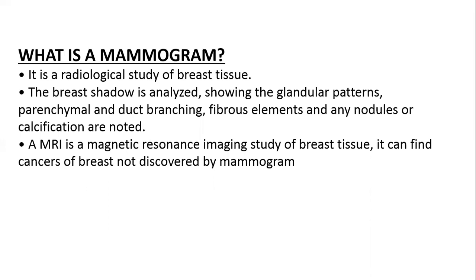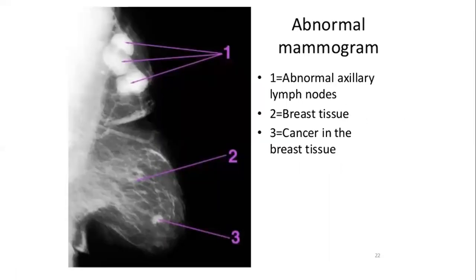A mammogram is a radiological study of breast tissue in which the breast shadow is analyzed. It shows glandular patterns, parenchymal and duct branching, fibrous elements, and nodular calcifications. If any cancer or malignancy is suspected from the mammogram, an MRI is done so all types of cancers can be detected. On the mammogram image, abnormal axillary lymph nodes, breast tissue, and calcifications or cancers can be identified.